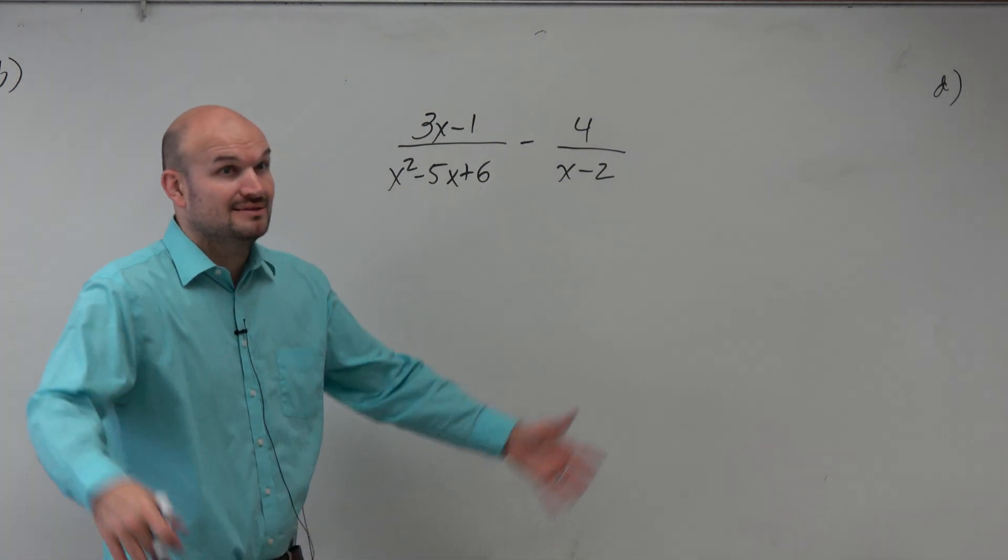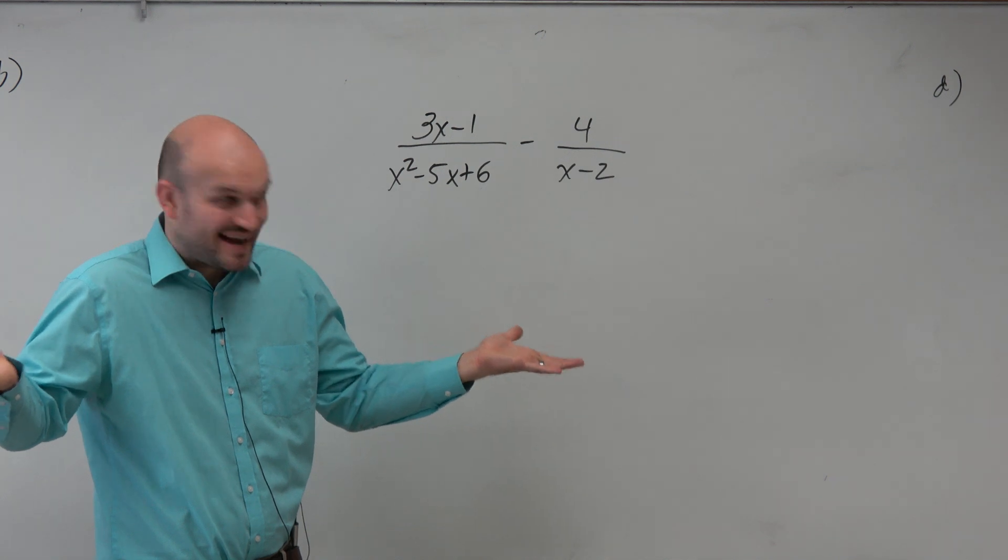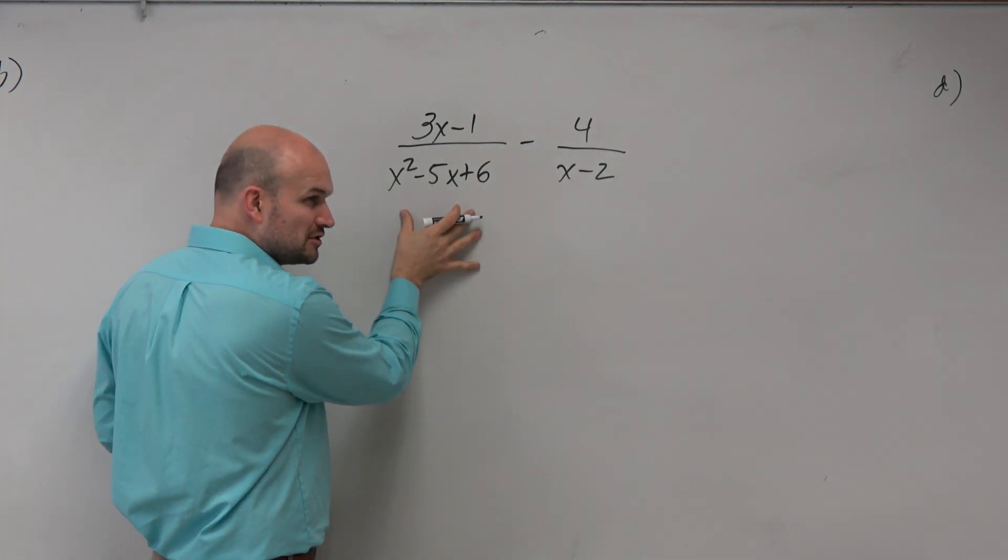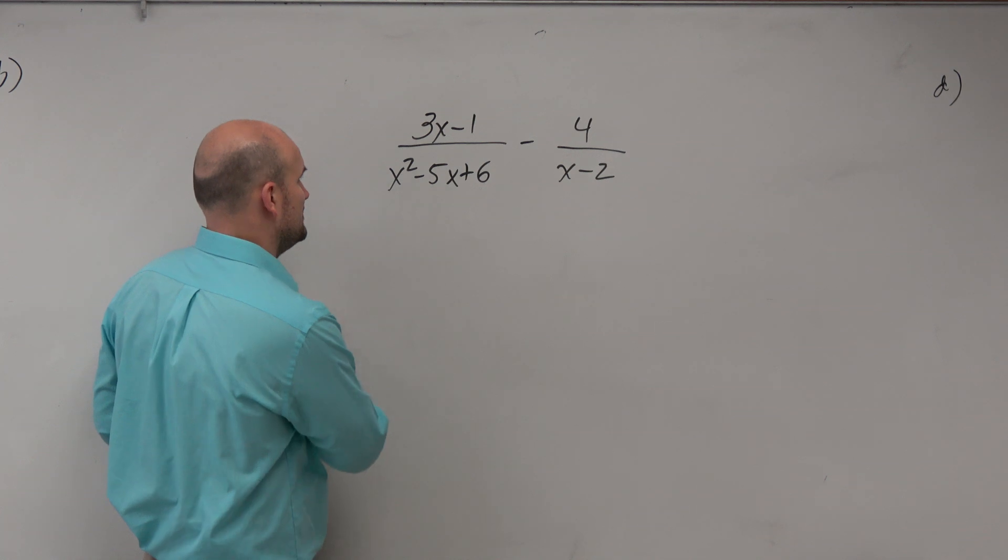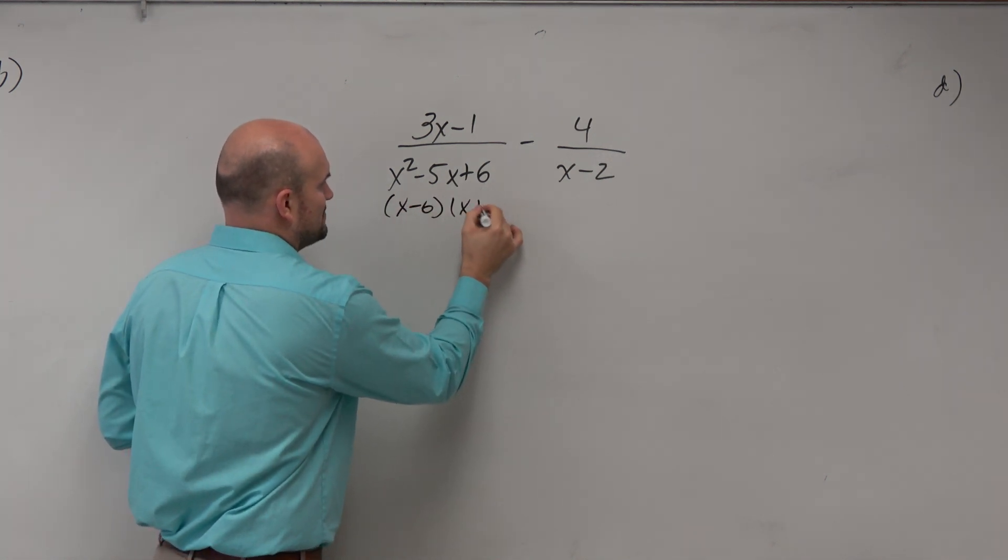First thing, I see a trinomial. Hey, let's factor it. Make sure it's factorable first before you put a line through it. Looks like this one's going to be x minus 6 times x plus 1.